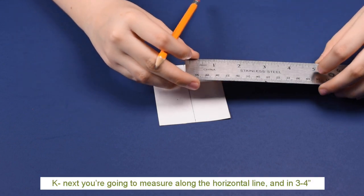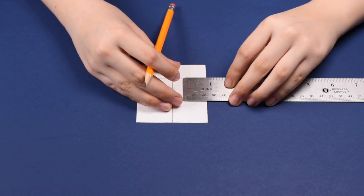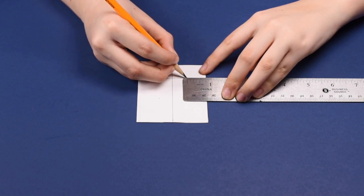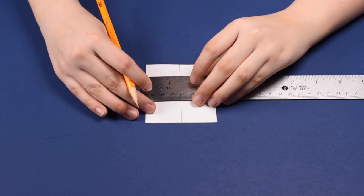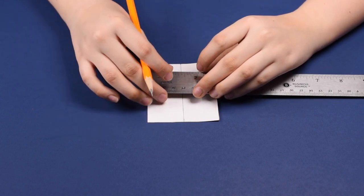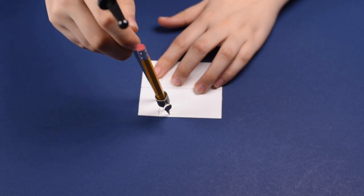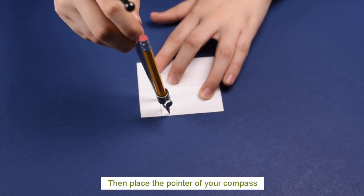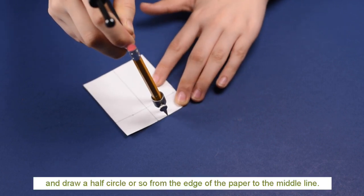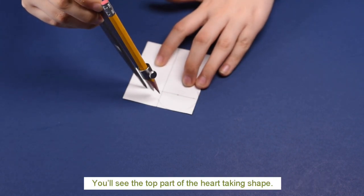Next, you're going to measure along the horizontal line in three-quarters of an inch from both sides and draw a horizontal line. Now measure on your compass to three-quarters of an inch. Then place the pointer of your compass on each of those dots that you just drew and draw half a circle or so from the edge of the paper to that middle line. You'll see the top part of the heart taking shape.